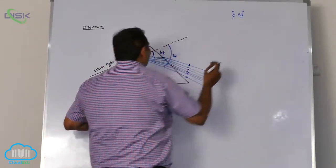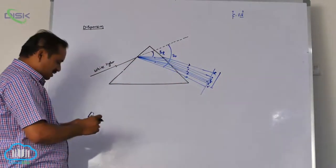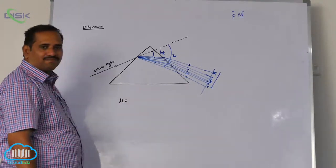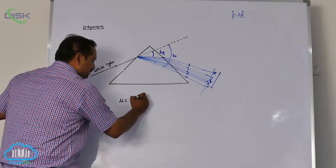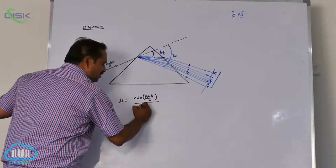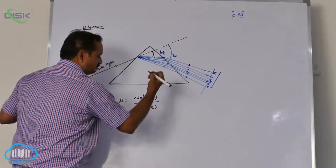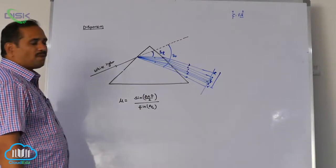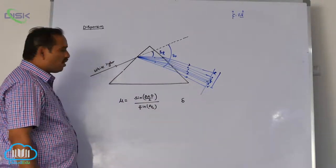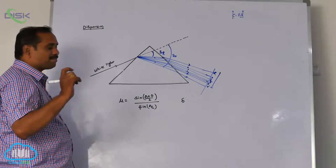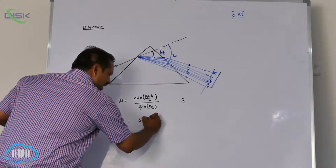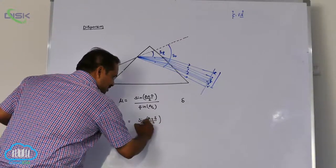For quantity exam questions based on this topic, recall the refractive index of the prism: μ = sin((A+D)/2) / sin(A/2). This condition was already derived. For a small-angled prism — where the angle is small — mean deviation is represented as delta, and μ = sin((A+δ)/2) / sin(A/2).